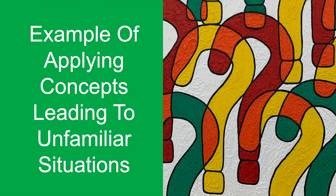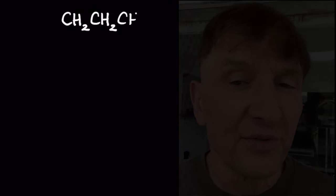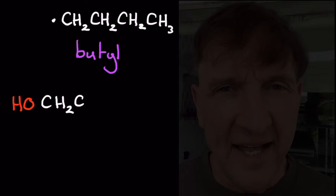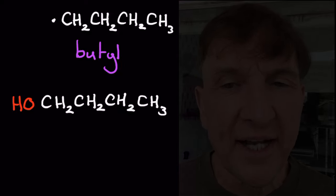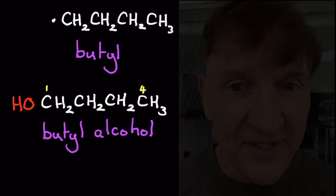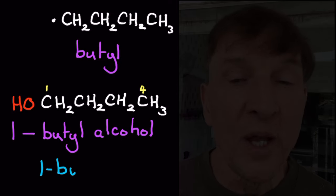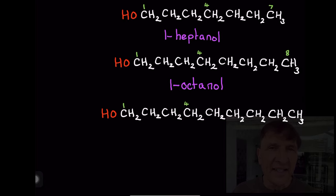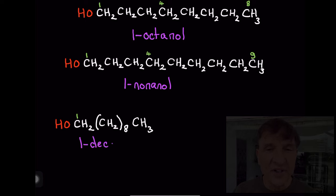Suppose we take a butyl radical and add OH•, a hydroxyl radical, to the end of it, and that functional group is an alcohol. We could call it butyl alcohol — more specifically, since the OH is connected on the first carbon, one-butyl alcohol, or more rigorously, one-butanol. Then if I ask you what's the structure of one-hexanol, one-heptanol, one-octanol, or one-decanol, you could work it out because you've got the concept.